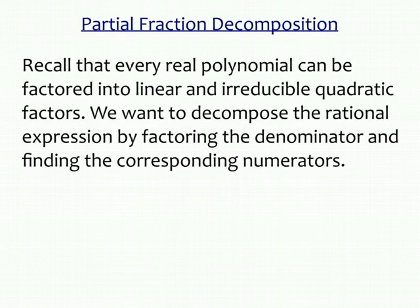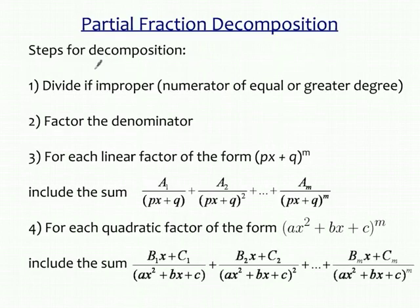Now let's look at how we go about doing the decomposition generally. First, if the rational expression is improper — meaning the numerator is of equal or greater degree than the denominator — then we want to do a division first, either a long division, to pull out a constant term and have a numerator of lesser degree than the denominator before we attempt the decomposition. Second, we want to factor the denominator using methods we know.